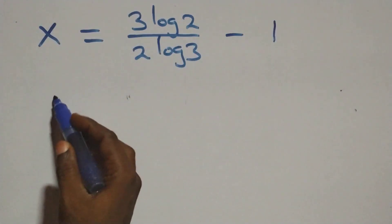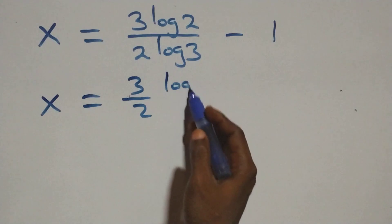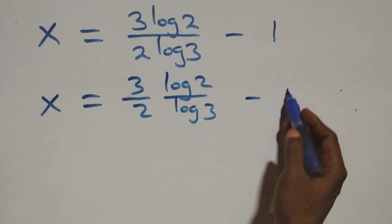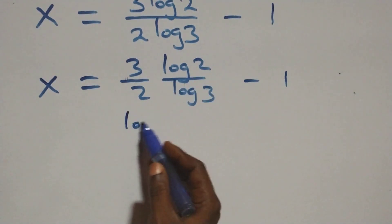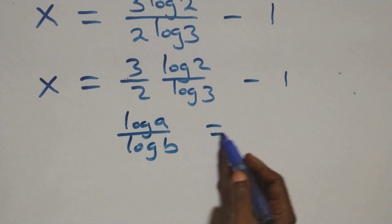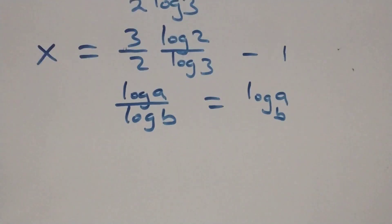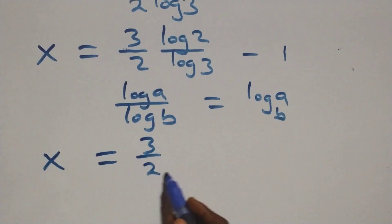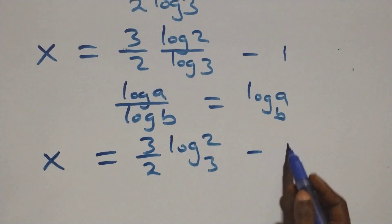Next step, we can write this as x equals three over two multiplied by log 2 over log 3, minus 1. Then we apply the change of base: log a over log b is the same thing as log a to base b. So what we have becomes x equals three over two times log 2 to base 3, minus 1.